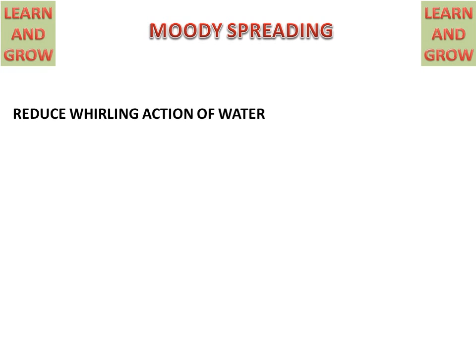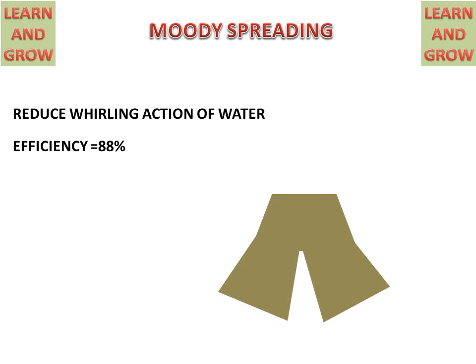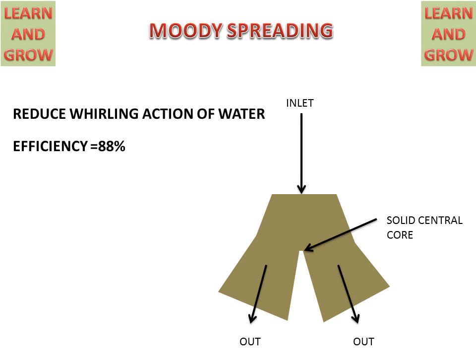This type is used for reducing the whirling action of water and its efficiency is about 88%. It has two passages and one inlet to outlet. Water will enter from the upper side and go outside from the lower side, which has two passages. This is the central solid core.